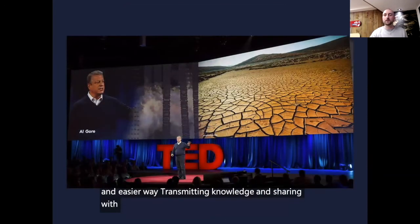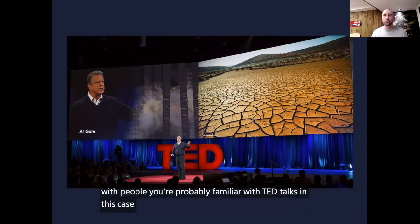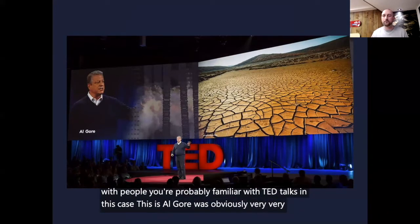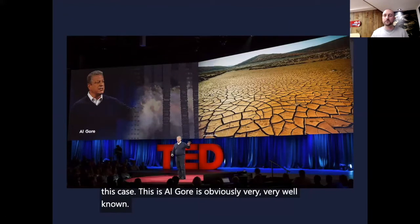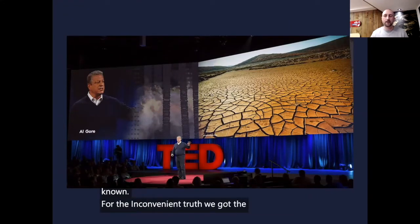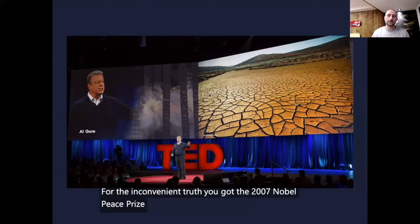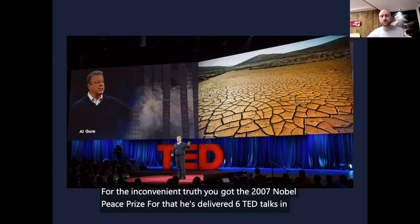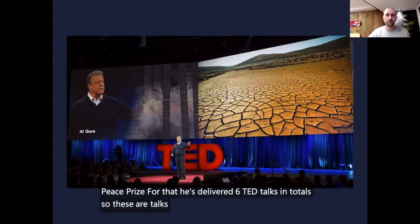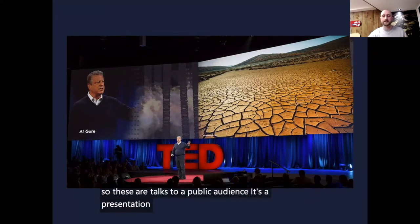You're probably familiar with TED Talks. In this case, this is Al Gore, very well known for An Inconvenient Truth — he won the 2007 Nobel Peace Prize for that. He's delivered six TED Talks in total. These are presentations filmed and then shared on platforms like YouTube.